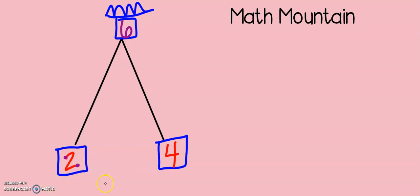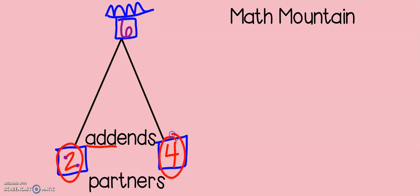Now, all three of these numbers on the math mountain have specific names. In first grade, you might have called the two bottom numbers partners. Those are great words for those two bottom numbers. In second grade, we are going to use another name along with partners. You may call them partners, or in second grade, we are also going to call them addends. I remember addends because it has the word add in it, and we add our two addends to get to our king, or our biggest number at the top of the mountain.